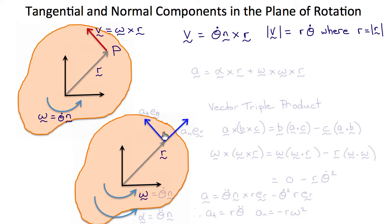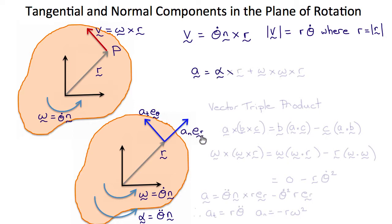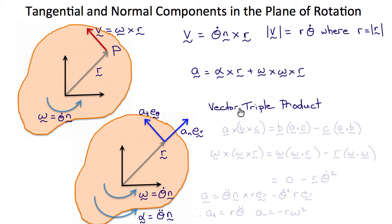Let's consider the tangent and normal components of the acceleration. Again, omega equals θ-dot n, and alpha the angular acceleration equals θ double dot n. The acceleration vector a has a tangent component parallel to the circumferential unit vector e_θ, and a normal component parallel to the radial unit vector e_r. Recall that the acceleration a is alpha cross r plus omega cross omega cross r, which is a vector triple product.